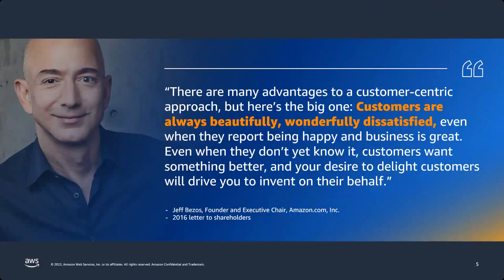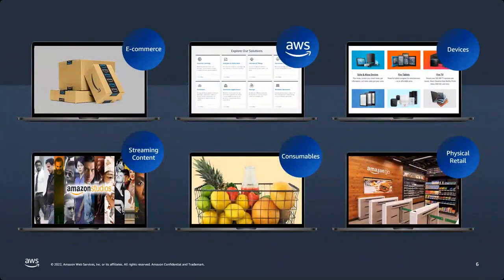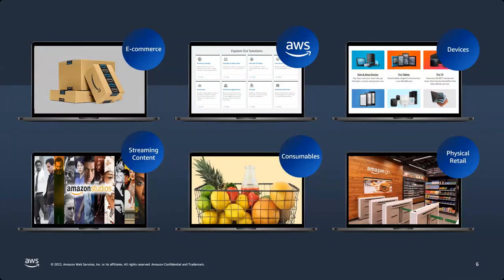We have multiple lines of business — from e-commerce, devices, streaming, Amazon Studios, Amazon Prime, consumables and retail. Also, if you look in the middle, AWS services — we have more than 210 services. We spent around 42 billion dollars on research and development and innovation in 2020. We are a company with around 1.5 million employees. To spend that amount of money for that number of customers, services, and employees, you need some ground rules, some playbooks — which I will mention. This shows you that we innovate at every line of business.